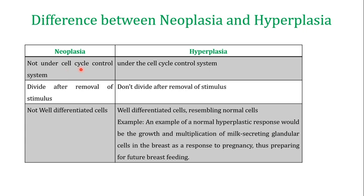I have a detailed video on the cell cycle control system and will share the link in the description. Neoplastic cells are not under the cell cycle control system, but hyperplastic cells are. Another difference is that neoplasia cells divide even after removal of the stimulus, whereas hyperplasia cells do not. Additionally, neoplasia cells are not well-differentiated, while hyperplasia cells are well-differentiated and actually resemble normal cells.